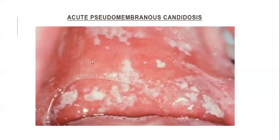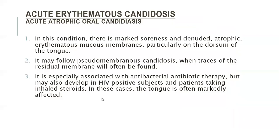This is how acute pseudomembranous candidiasis looks: you can see the white curd-like pseudomembrane. If you try to remove the pseudomembrane with a tongue depressor, you will find red raw erosive areas. Then acute erythematous candidiosis or acute atrophic oral candidiasis: in this condition there is marked soreness and denuded atrophic erythematous mucous membranes, particularly on the dorsum of the tongue. It may follow pseudomembranous candidiasis with traces of residual membrane, and is especially associated with antibacterial antibiotic therapy.